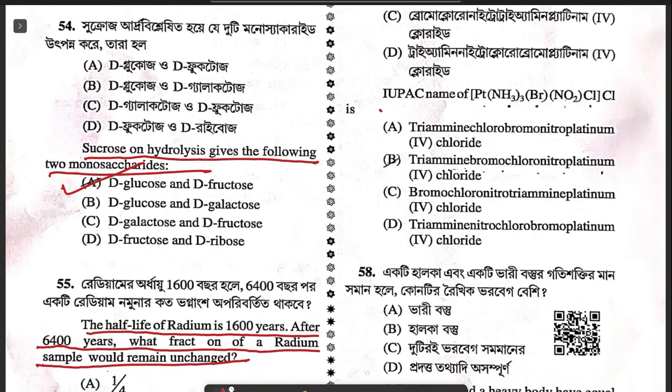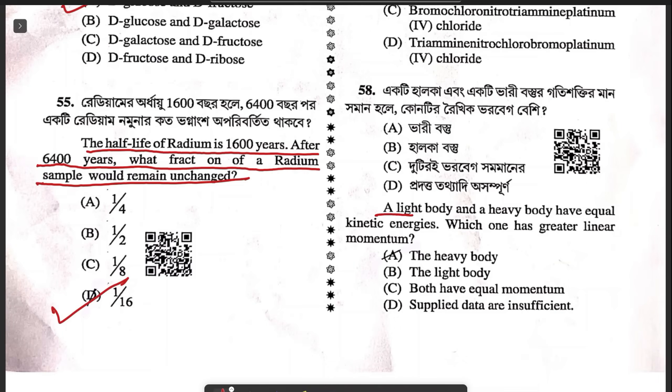Question 57: the IUPAC name of Pt(NH₃)₃(Br)(NO₂)(Cl). It is: triammine bromo chloro nitro platinum(IV) chloride. So option D.